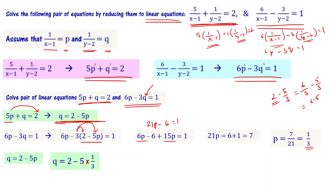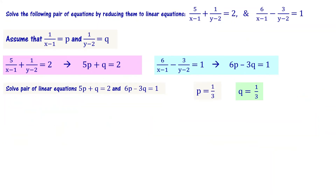So p equals 1 by 3 and q equals 1 by 3. Let us note this. We already assumed p equal to 1 by (x minus 1). Because finally, by solving this equation, we have to find the value of x and the value of y — p and q are not the end of the problem solution.